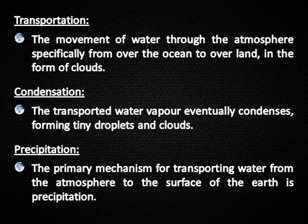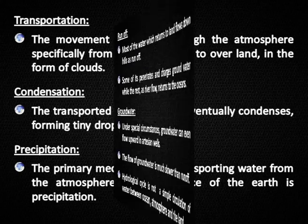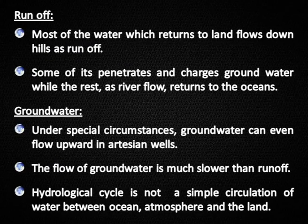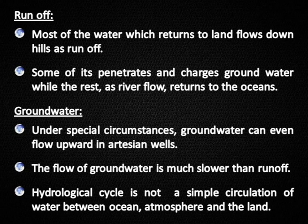Precipitation: The primary mechanism for transporting water from the atmosphere to the surface of the earth is precipitation. Runoff: Most of the water which returns to land flows down hills as runoff. Some of it penetrates and recharges groundwater, while the rest, as river flow, returns to the oceans.